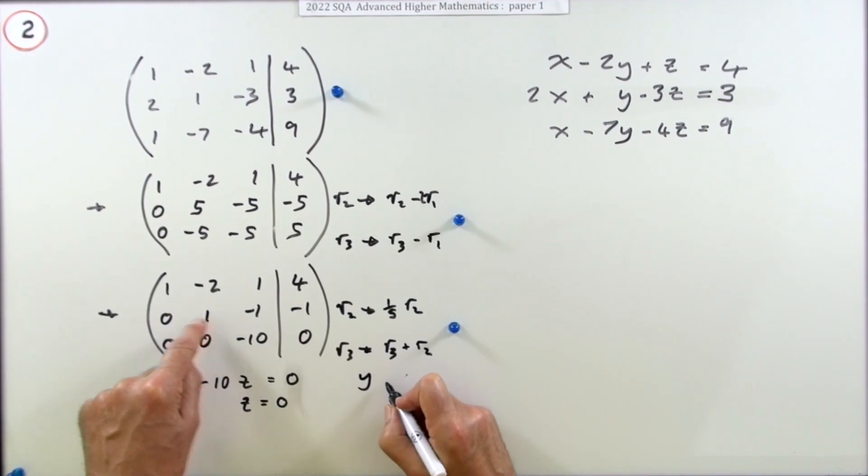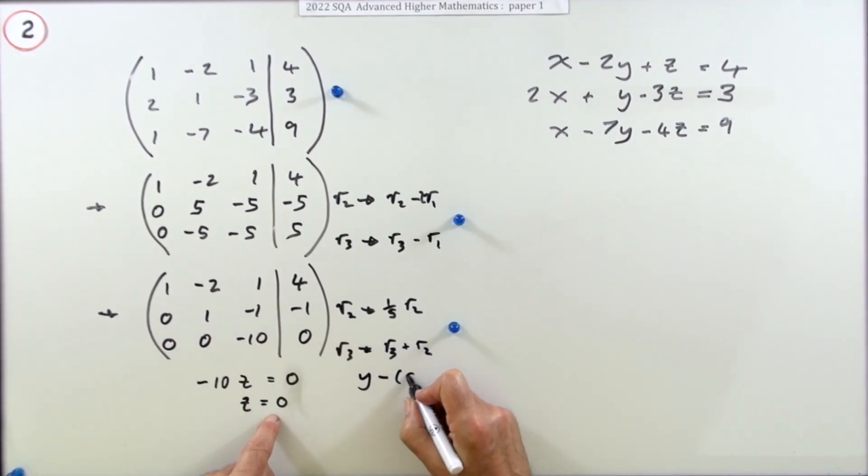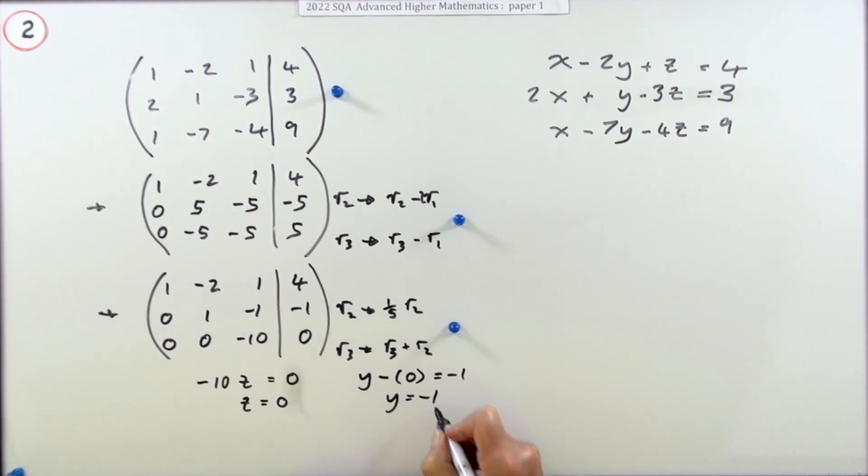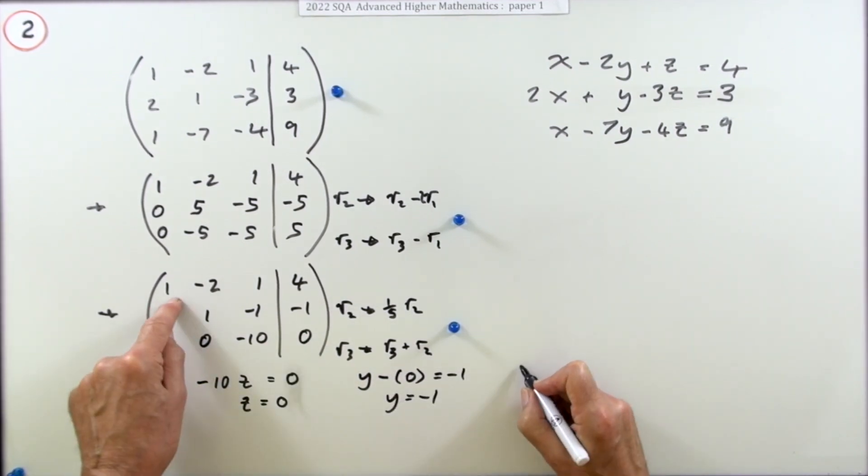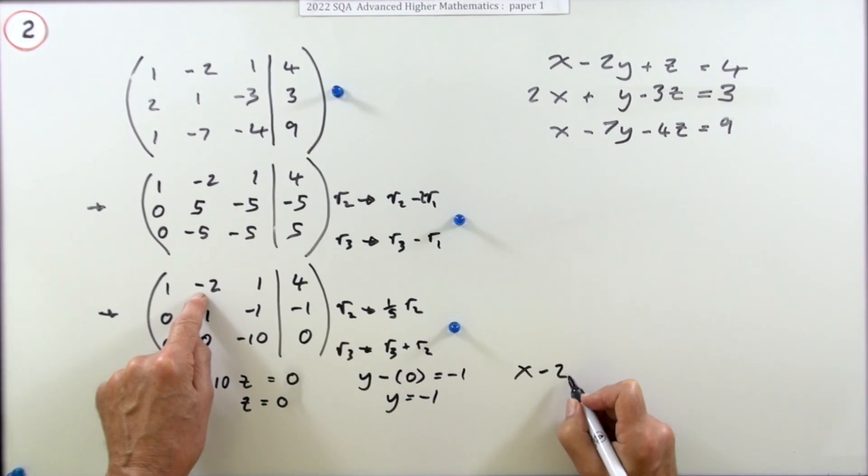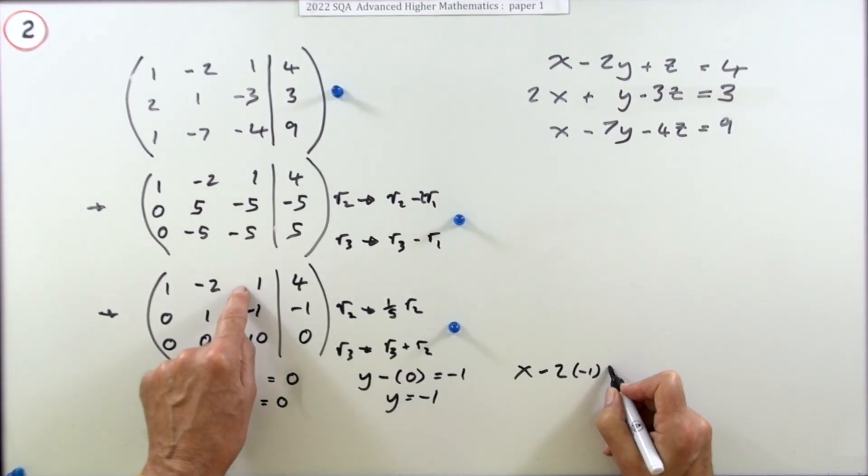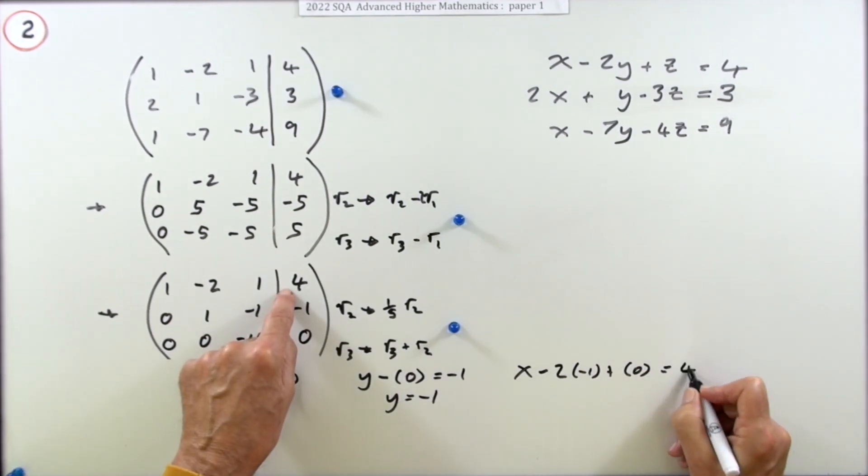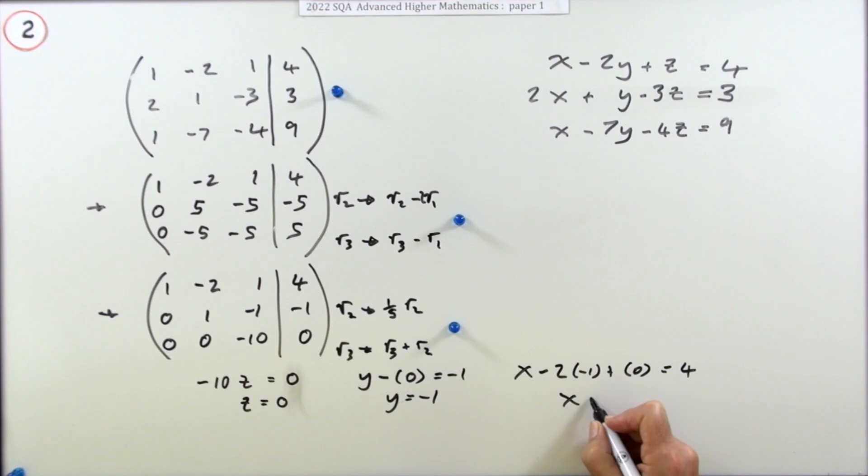Now let's just finish it off. These are the coefficients of these variables, so what does this say? This says -10z equals 0, so in other words z equals 0. Feed it back up: that one means you've got y take away z which is 0, and that should come to -1. Well that just means y is -1.